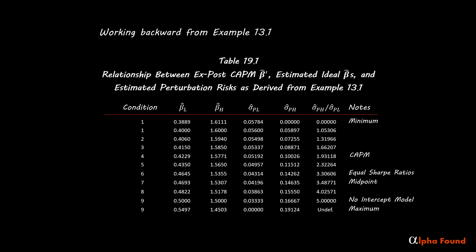Table 19.1 shows the relationship between ex-post CAPM beta estimates, estimated ideal betas, and estimated perturbation risks as derived from Example 13.1. Selected combinations of ideal beta estimates and perturbation risks are shown which result in the same realized portfolio returns, portfolio standard deviations, and portfolio CAPM betas. Which one reflects the true ex-ante conditions most accurately cannot be determined. The notes column is explained in the examples given in the next video.